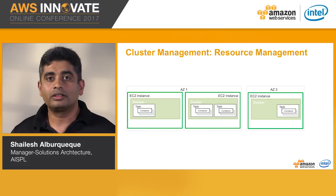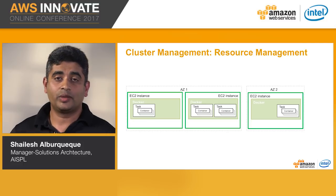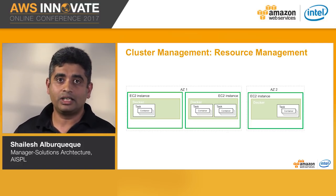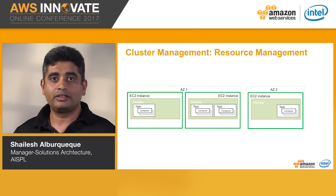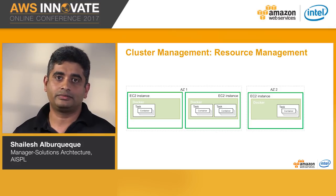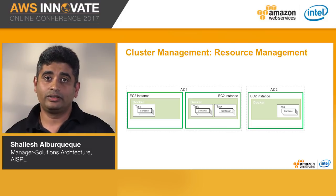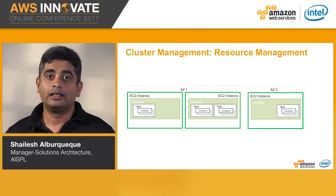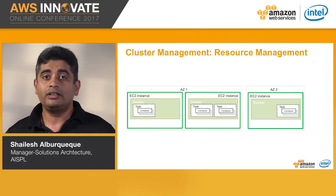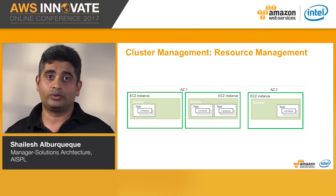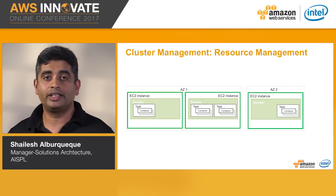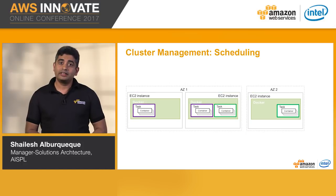The first component is the resource manager, which is responsible for keeping track of resources like memory, CPU, and network ports, and the availability of these resources at any given time in the cluster. The EC2 instances are spread across two availability zones, all running the Docker daemon. ECS works across multiple availability zones, which means you can span your cluster across availability zones to improve the availability of your applications.